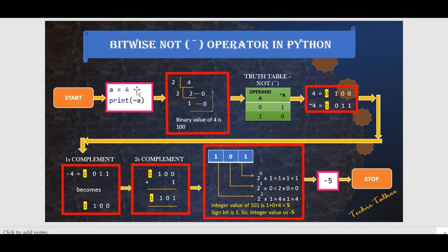First, this integer value 4 will be converted to a binary value. For converting an integer to a binary value, we divide it by 2 until we get a remainder of 1 or 0. So the binary value of 4 is 1, 0, 0. This is the truth table of the NOT operation: 0 will be converted to 1 and 1 will be converted to 0. Since we deal with negative values in the NOT operation, we need a sign bit. The sign bit 0 means it is a positive value.